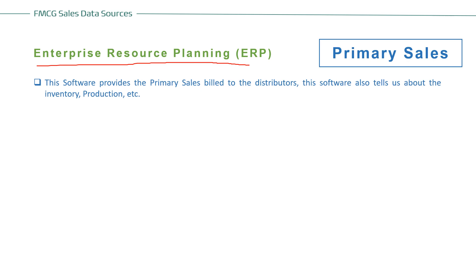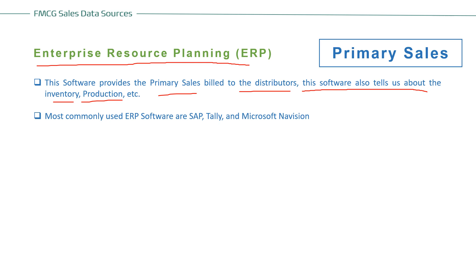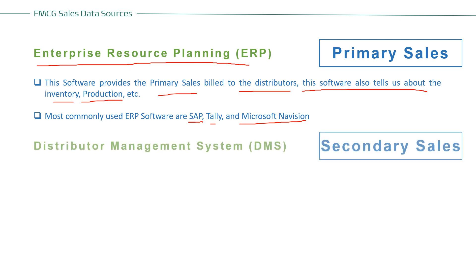Enterprise Resource Planning (ERP) is used to capture the primary sales. This software provides the primary sales bill to the distributors and also tells us about inventory, production, and all other things. The most commonly used ERP software includes SAP, Tally, Microsoft Navision, Salesforce, and various other softwares.